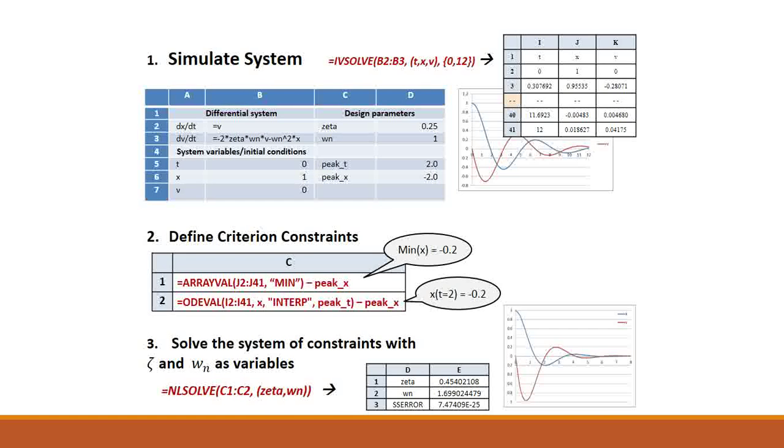The third step is to solve the system of constraints with zeta and omega as the variables, using the calculus function nlsolve. The desired behavior is obtained, as shown by the resulting graph of the plotted solution.